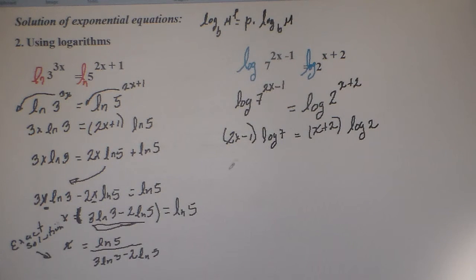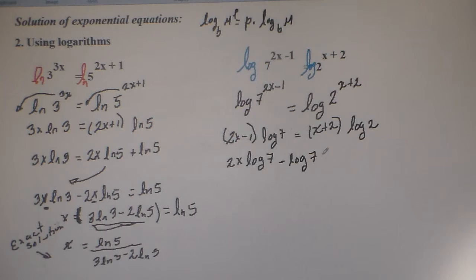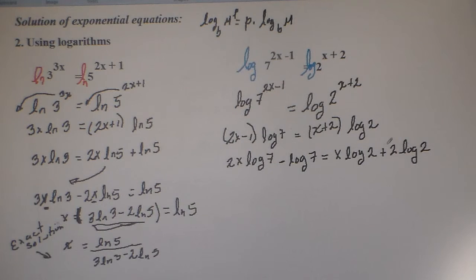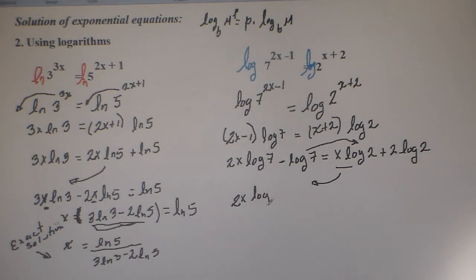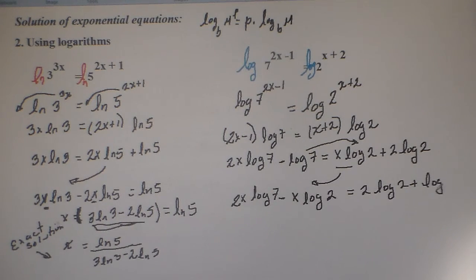We multiply now using the distributive property: 2x times the logarithm of 7 gives 2x log of 7, minus — because negative times positive is negative — 1 times the logarithm of 7 gives log of 7, equals x times the logarithm of 2 gives x log of 2, and 2 times the logarithm of 2 gives 2 log of 2. Now we group the x terms together: we bring the x log of 2 term to the left and the constant to the right, giving us 2x log of 7 minus x log of 2 equals 2 log of 2 plus log of 7.